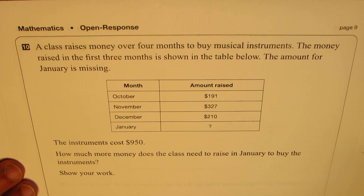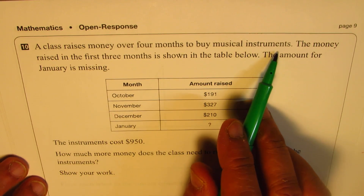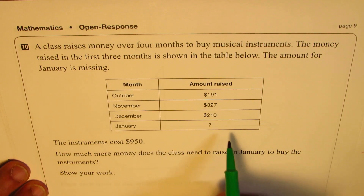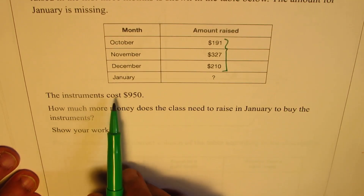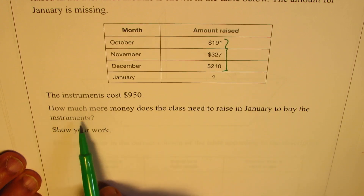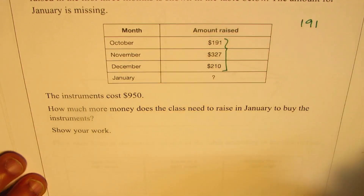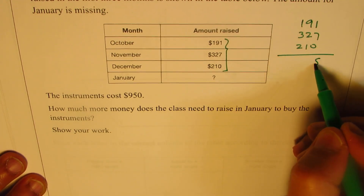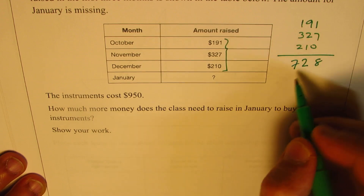Question number 10 is an open response question. A class raises money over four months to buy musical instruments. The money raised in the first three months is shown in the table, but the amount for January is missing. The instruments cost $950. How much more money does the class need to raise in January? Let's add the known amounts: 191 plus 327 plus 210. That gives us 728 raised so far.